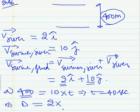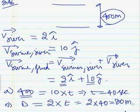So we plug in the value of T here. We get 2 times 40, which is 80 meters. I hope you understand this problem. Thanks for watching.